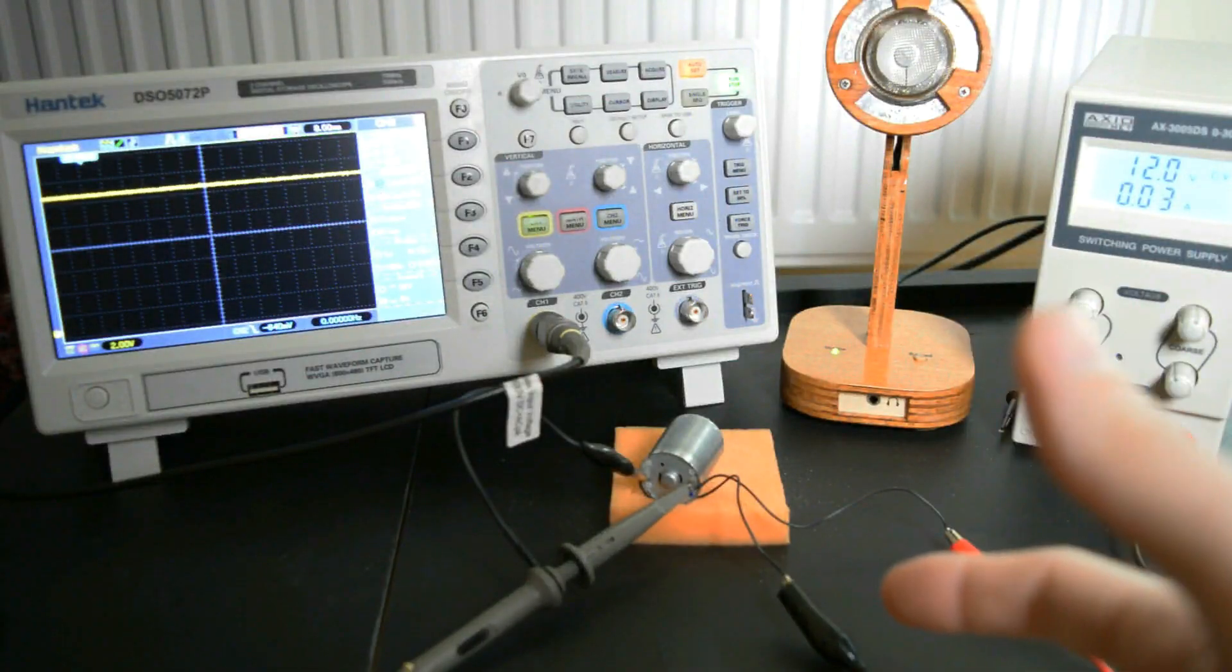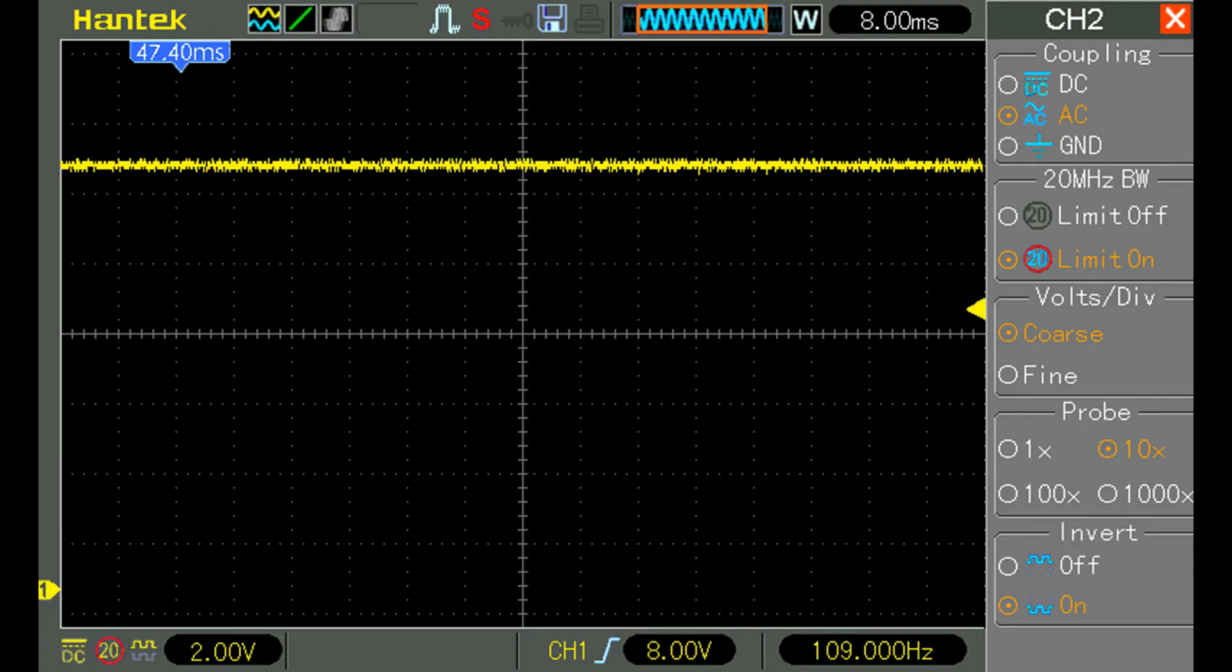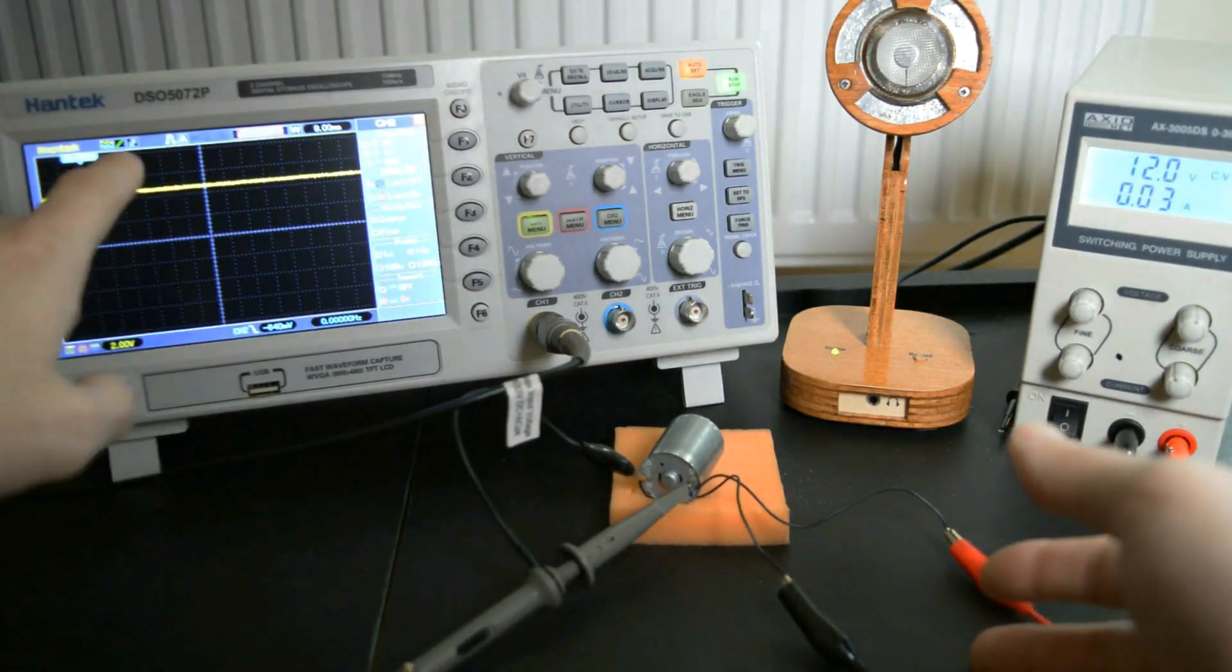Now, if we just look at the voltage on the motor, we can see that it's quite clean. So we have a DC voltage going and turning on our motor. But is there anything hidden inside that?